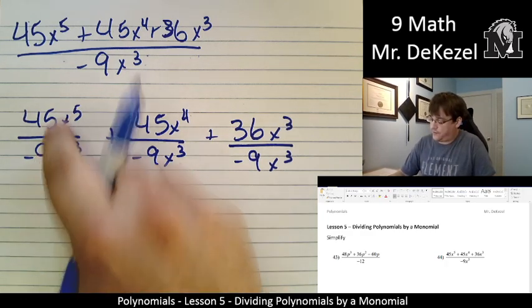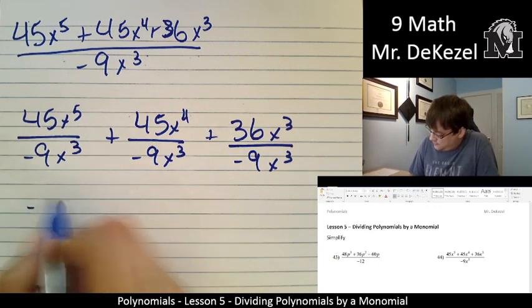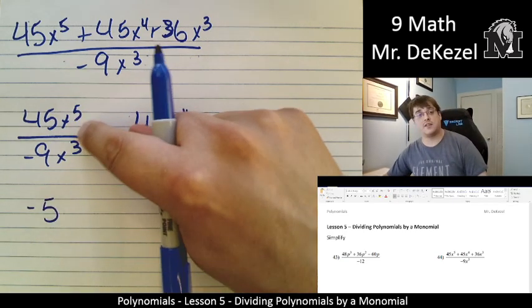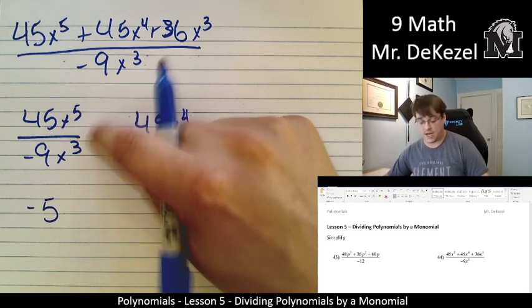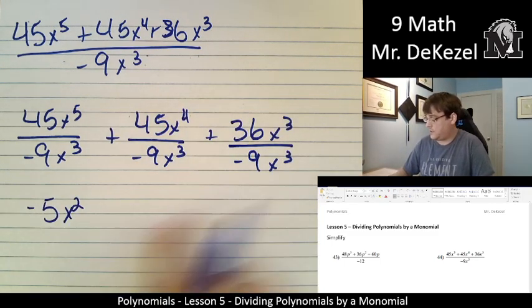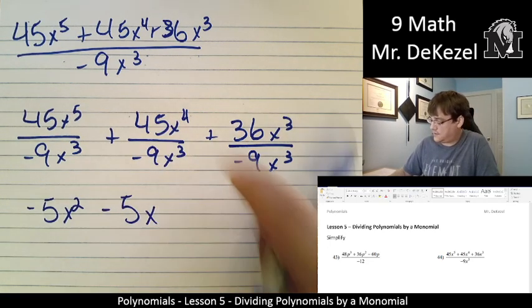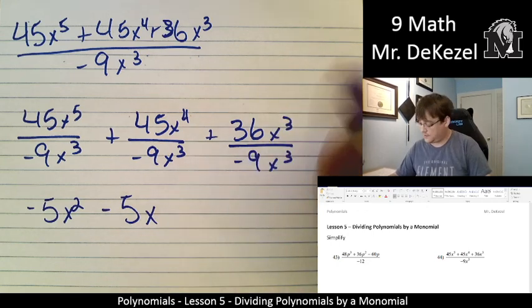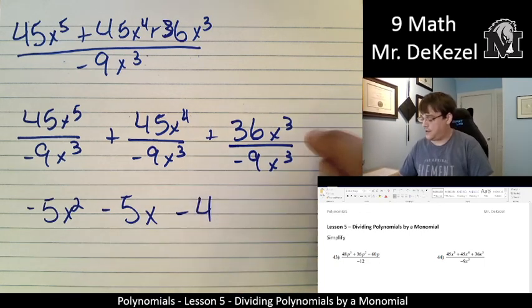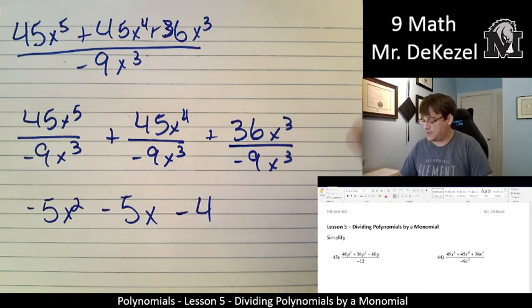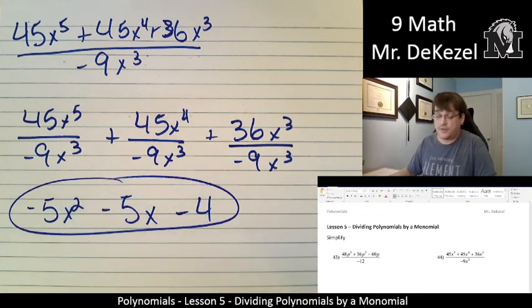So we have 45 divided by -9. That would be -5. And then x⁵ subtract x³. So we're subtracting 5 and 3. That's x² minus, again, 5x, because 4 minus 3 is just 1. And then a negative, again, 36. So this one is 4. And then x³ minus x³. 3 minus 3 is 0. So we just leave this as a constant. And this right here is our final answer.